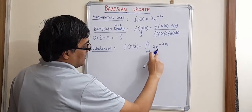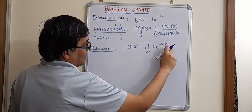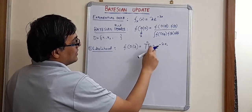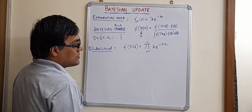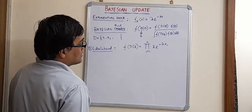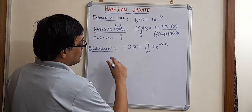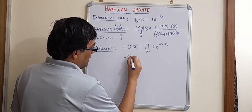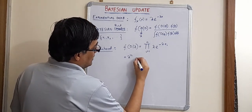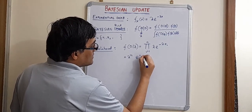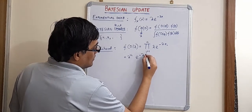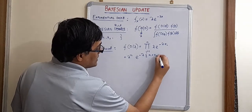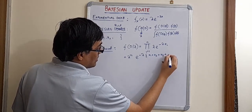So basically, lambda e to the power minus lambda x1 into lambda e to the power minus lambda x2 and so on. So basically, it's the multiplication of the probability density. We have already discussed about likelihood. So this kind of simplifies to lambda to the power n if I carry out the product into e to the power minus lambda. And this becomes x1 plus x2 plus x3 and so on.